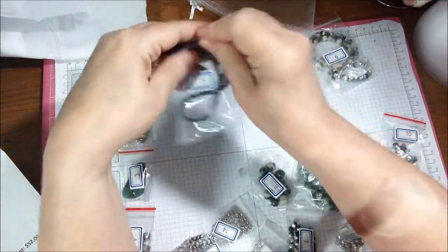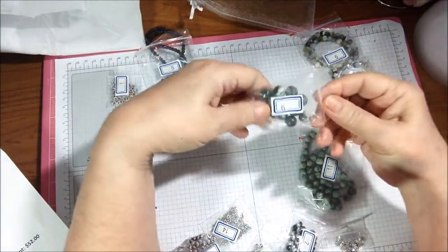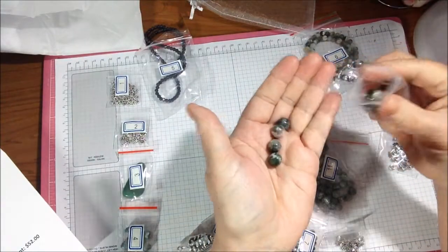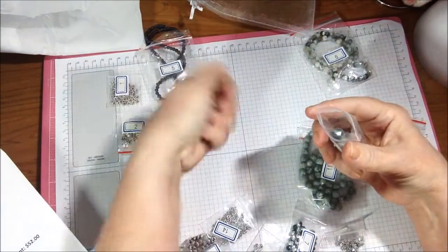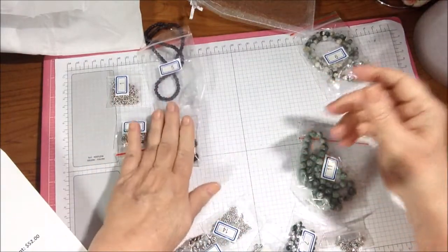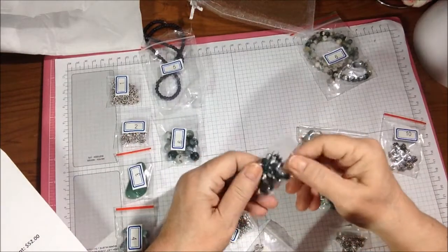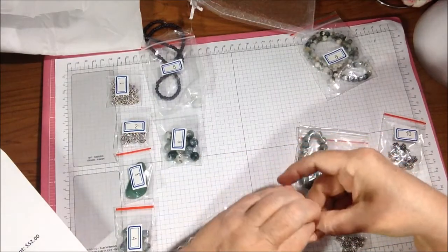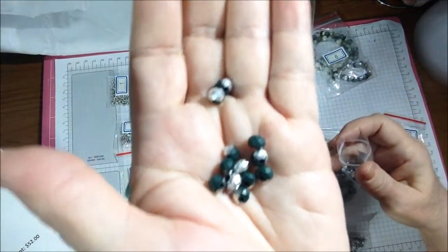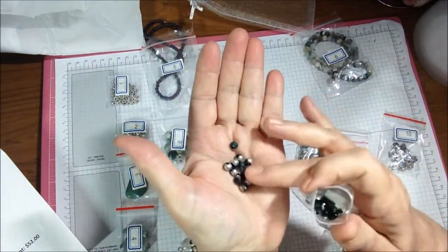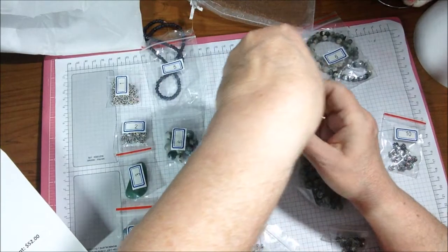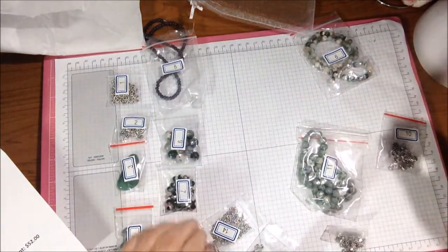Number six is 12 pieces of 10 millimeter tree agate round gemstone beads. I love gemstones! They're like a green and white tree agate. It does have that snowy effect. Number seven is 40 pieces, six by four millimeter crystal rondelle beads in deep emerald and silver. They're not my favorite but I can probably use them. They're faceted, they have sparkle to them. I do like the silver, and we'll see how I use them.